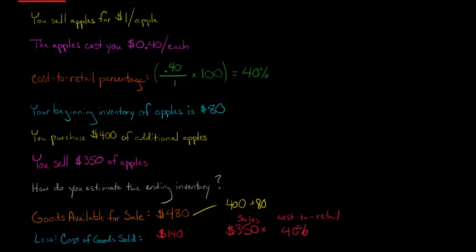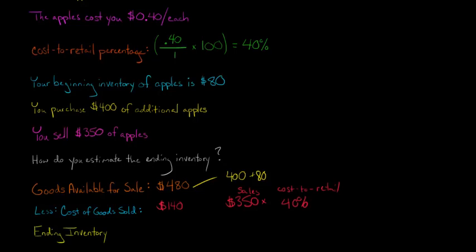Now we take the goods that were available for sale, which is $480, that's what we started with, what we purchased, and then we subtract, and I'll just put it in parentheses so you know we're subtracting, we subtract our cost of goods sold. We're saying, look, we sold apples that cost us $140 during the period. So if we take $480 and we subtract $140, that gives us $340.